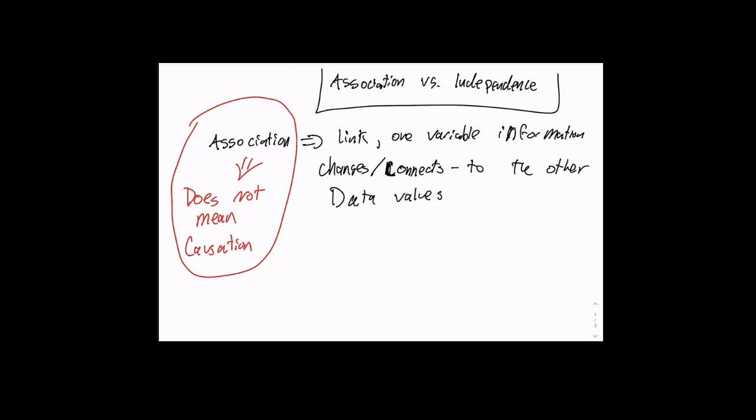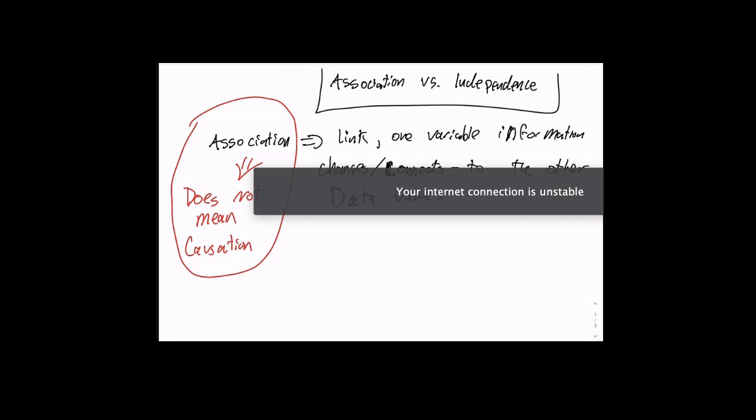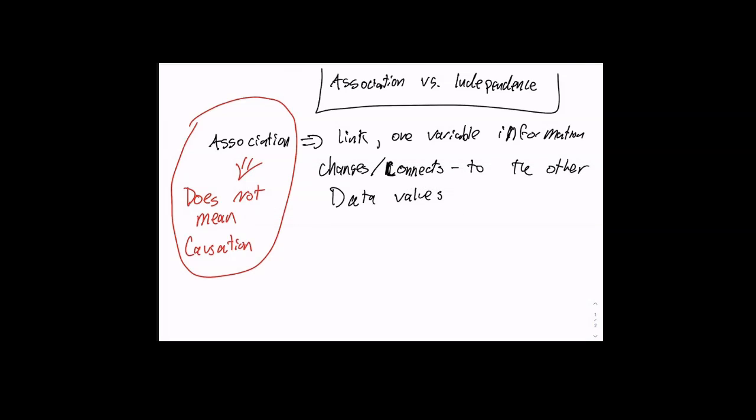Typically, that student would have a higher grade than a different student who doesn't attend. But it does not mean that it's true — it does not mean that one student who has higher attendance always has higher grades. People who don't understand statistics will make bad decisions. They think it's a fact. They think it's causation.